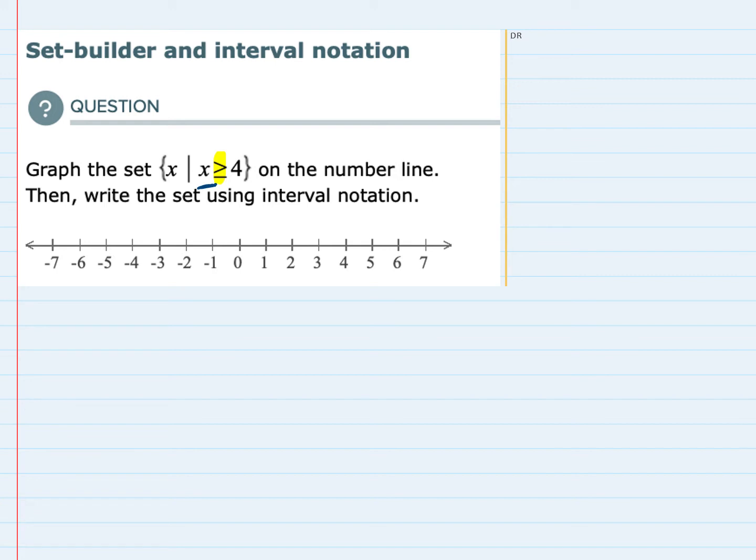But before I get there, I'm just going to start with 4 because it says X greater than or equal to 4. I'm going to go out here to position 4 and put a circle to indicate that that's a point of interest. But it does say greater than or equal to, and since it has the line underneath, that says 4 is a possible solution. I'm going to shade in this circle.